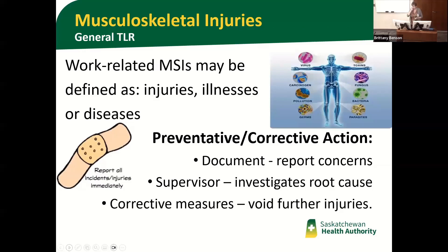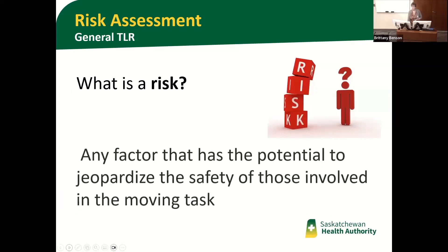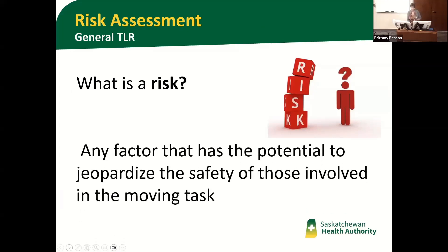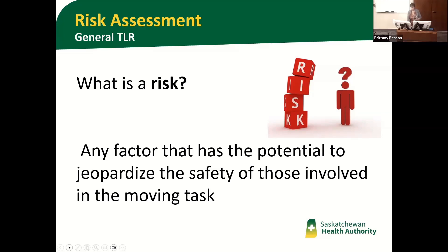NSIs are defined as injuries, illnesses, and diseases. For prevention, find out how to report your concerns — you can call 1600 to report any incidents, even a near miss. Make sure your supervisor is able to investigate what caused the injury, as it may injure someone else. Follow any corrective measures because they've already identified the root cause. A risk is any factor that has the potential to jeopardize the safety of those involved in the moving task, including everybody in the room. When doing your self-assessment in the morning, include all risk areas and figure out how to manage or eliminate them.